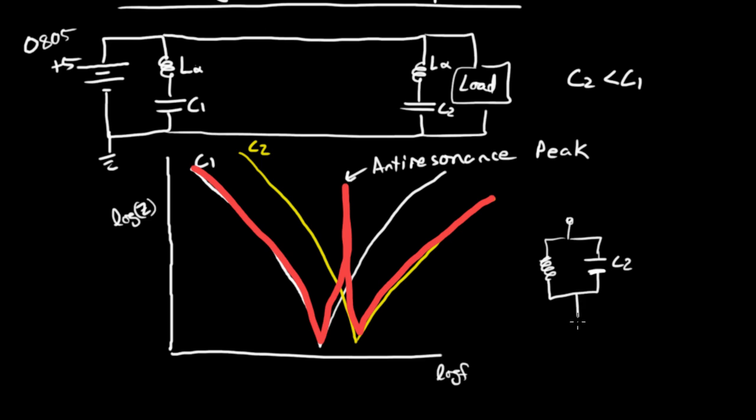This is a parallel resonant circuit, so at some frequency it's going to look like it has an infinite impedance. This is plus 5 volts, and this is ground, and so any ripple up here from loads off on the side is not going to be shunted to ground, so you have an anti-resonance peak.